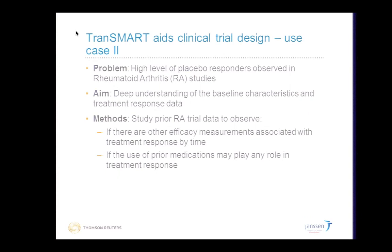The next use case is looking at placebo response in a rheumatoid arthritis study. When you have a study treating patients with drug versus placebo, the ultimate goal is that your drug-treated patients respond while your placebo patients remain relatively stable. If you have a high level of placebo response, you can end up skewing your data and making your efficacy look not as good as it is. They had this problem of high placebo responders in RA studies and wanted to see if there's any baseline characteristic that could predict who will be a placebo responder, to potentially exclude these patients from a future study. They did this in two ways: looking at other efficacy measurements associated with treatment response, and looking at the use of prior medications.